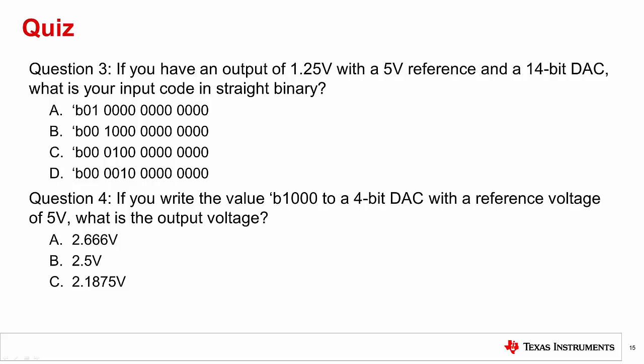Question 3. If you have an output of 1.25V with a 5V reference and a 14-bit DAC, what is your input code in straight binary? Using the equation we defined earlier, we can see that the input code is 4096. Converting that into binary, we see that the answer is A.